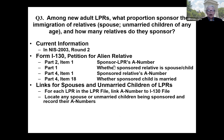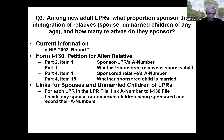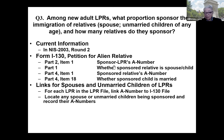Third question: Among new adult LPRs, what proportion sponsor the immigration of relatives, and how many do they sponsor? New LPRs are only allowed to sponsor a spouse or an unmarried child of any age. There is some information currently available, but I have not seen anyone actually produce estimates from the new immigrant survey for 2003. The DHS data can answer this question, linking the A number from one file to another file to locate the type of relative.